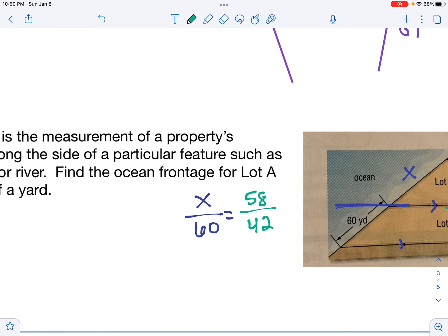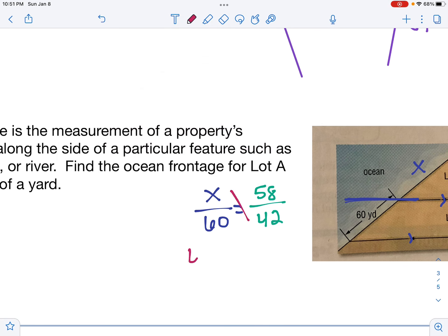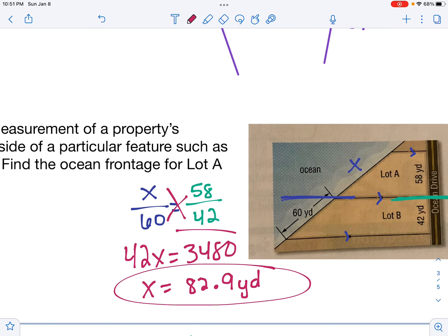So there's our fractions. Now we can go ahead and cross multiply in order to solve. So I'm going to cross multiply. X times 42 is 42X. I'm going to get my calculator out to do this next one. So we would have 60 times 58, which is 3,480. To solve, I'm going to divide by 42 to get X equals 82.9 yards. And there would be the length of that missing segment.